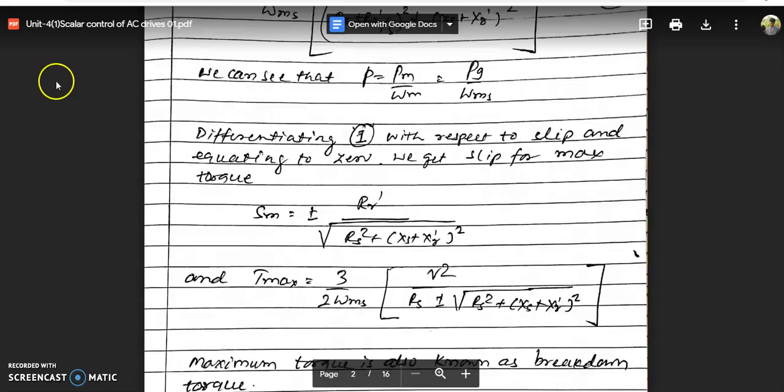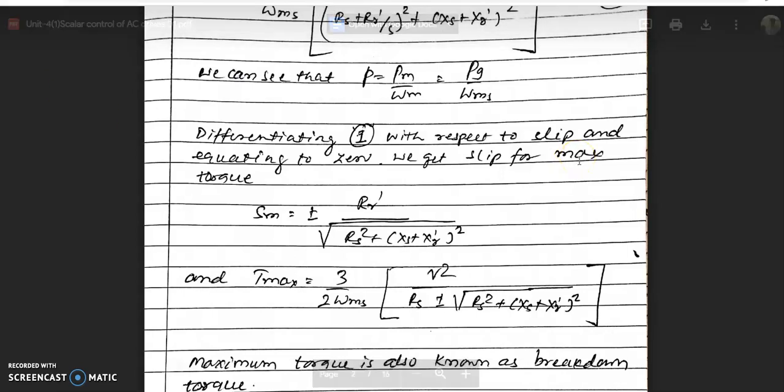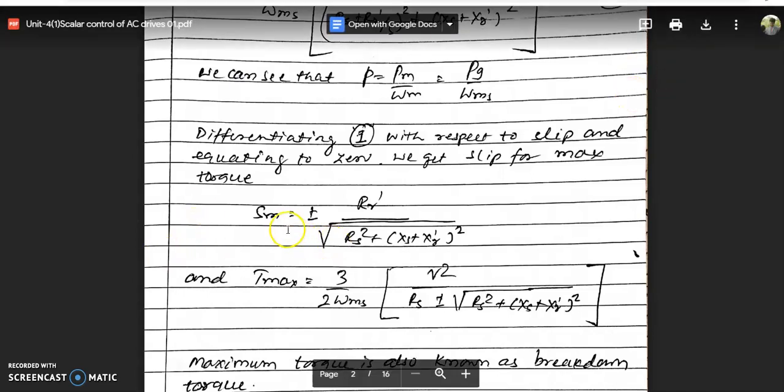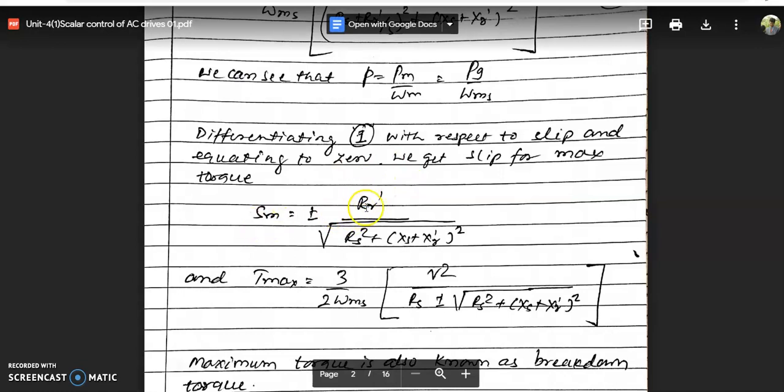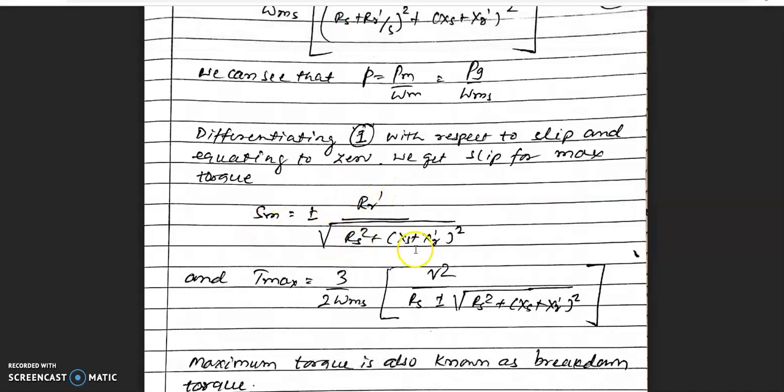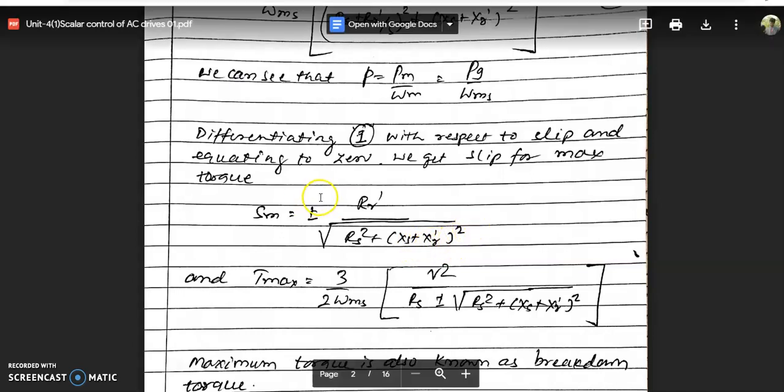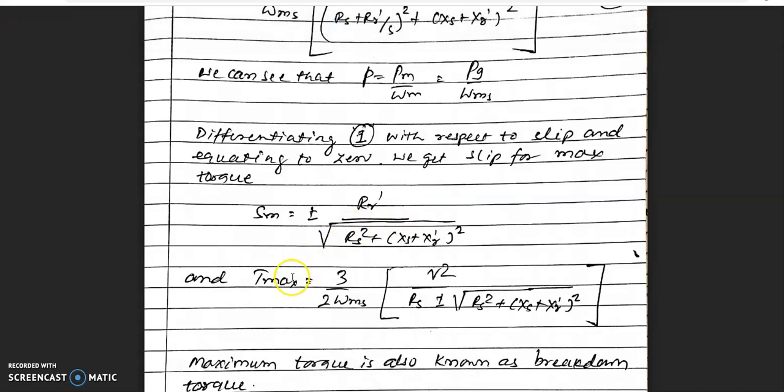When we differentiate the torque equation with respect to slip, which is the only variable part, we get the condition for maximum torque. The slip value at maximum torque is R'r divided by the square root of (Rs² + Xs + Xr)².